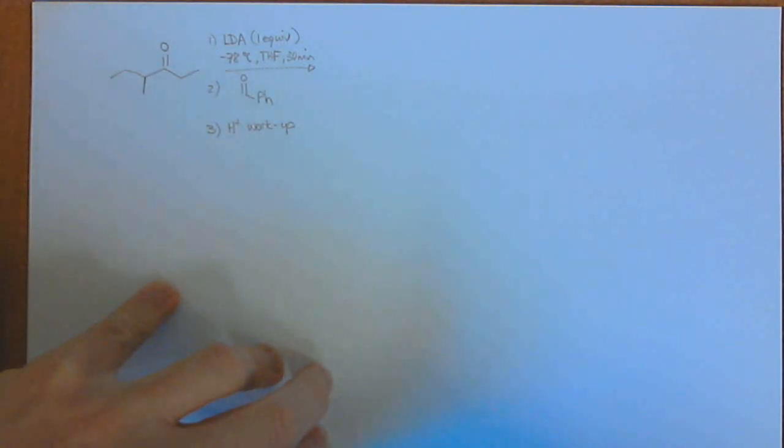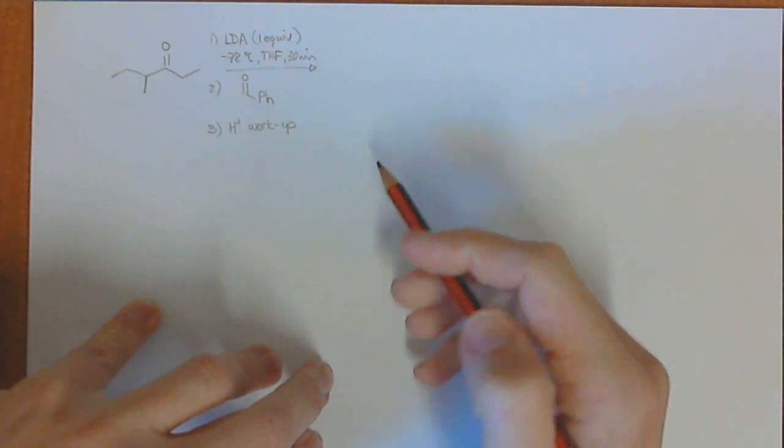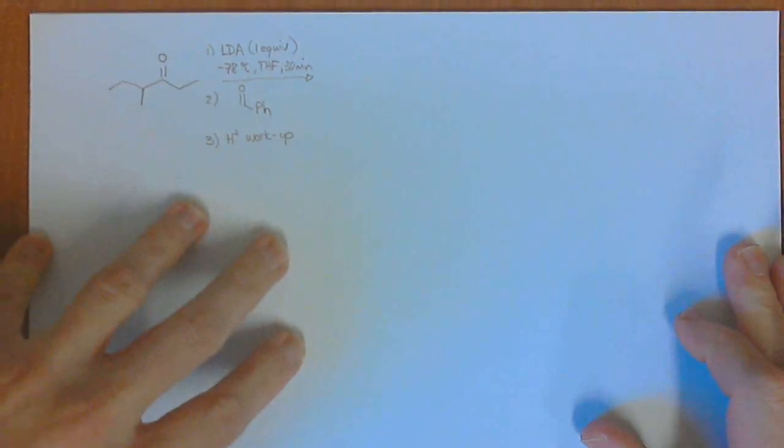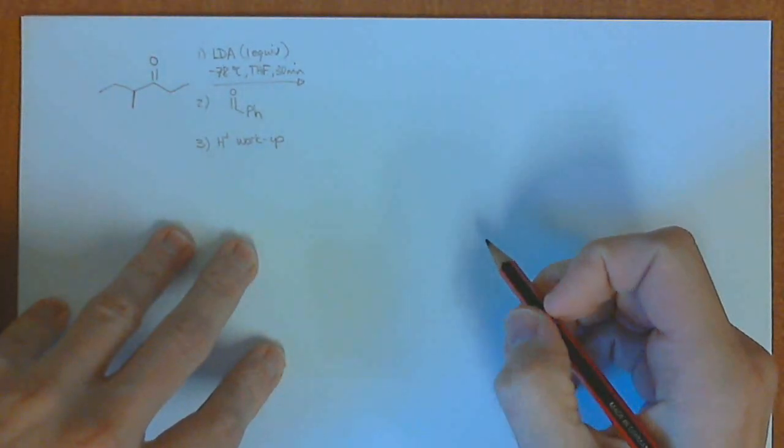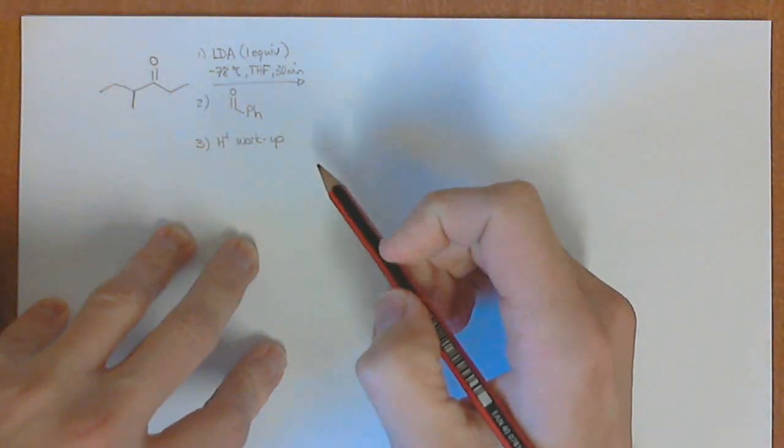Okay, so what I want to do now is one of the last, this is the last transition state model that I have in my part of the course, and it's the Zimmerman-Traxler transition state model, and it's used to determine the major diastereomer in reactions of this type, it's aldol reactions, and we've already covered this in class, the types of reactions.